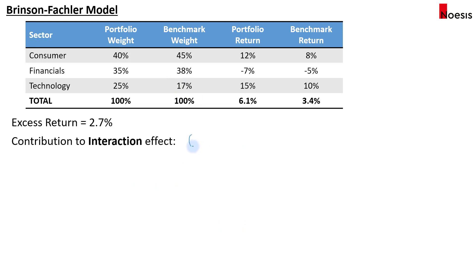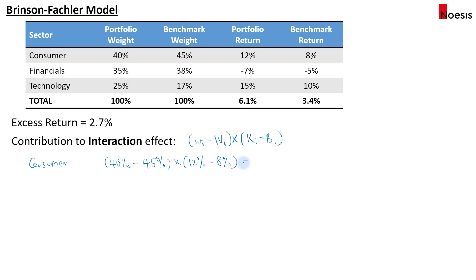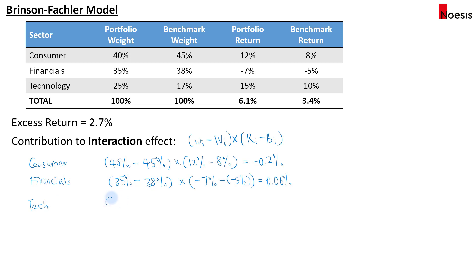For the interaction effect, we take (portfolio weight minus benchmark weight) multiplied by (portfolio return minus benchmark return for that sector). For consumer: (40% minus 45%) times (12% minus 8%) equals negative 0.2%. For financials: (35% minus 38%) times (negative 7% minus negative 5%) equals 0.06%. For technology: (25% minus 17%) times (15% minus 10%) equals 0.4%. The total interaction effect is 0.26%.